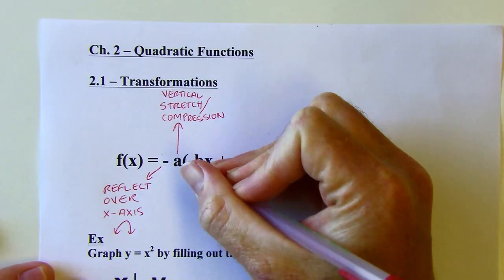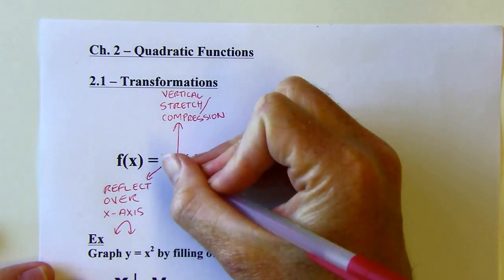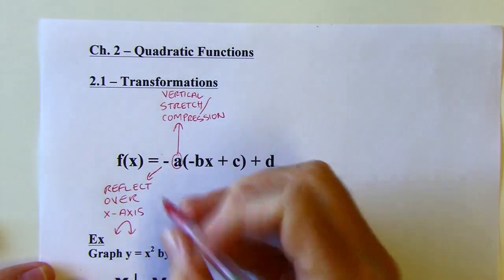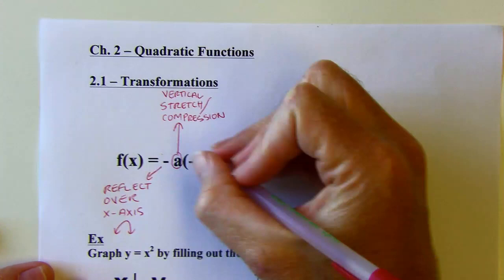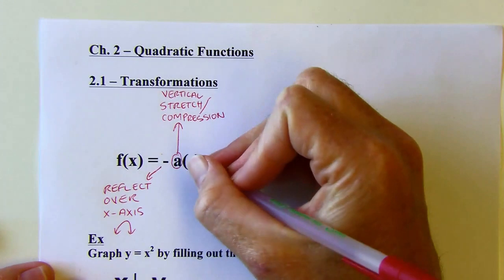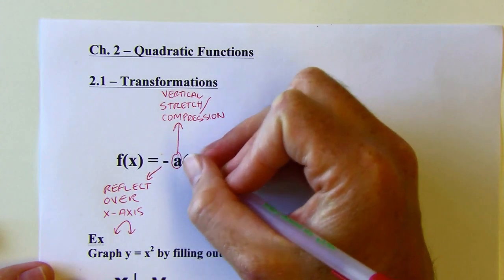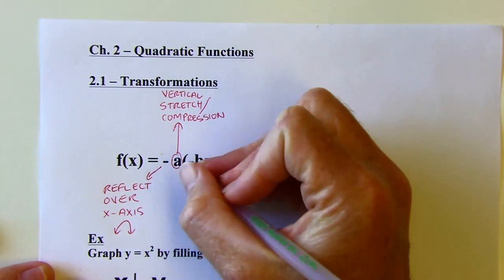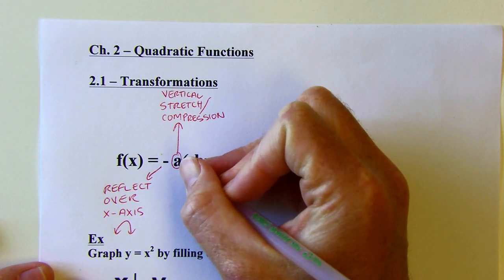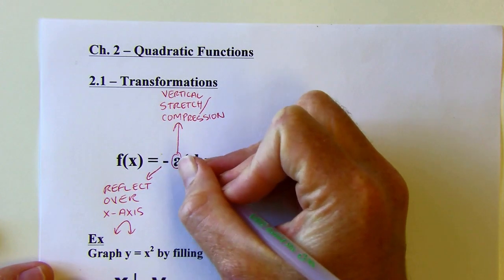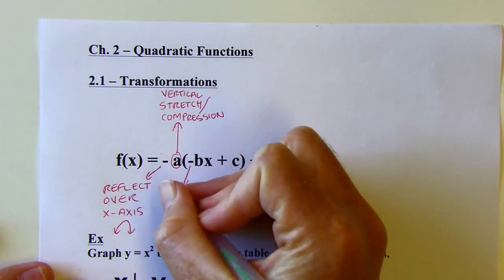That's just for the a value. The negative is kind of its own agent that would flip things around. When we're talking about the negative inside the parentheses, this would reflect over the y-axis.